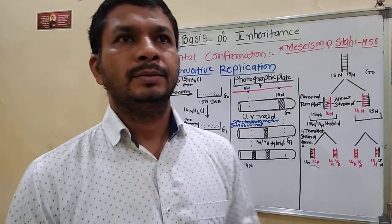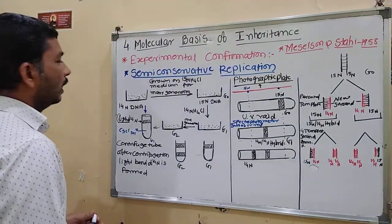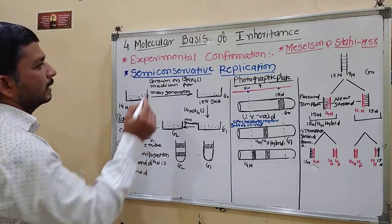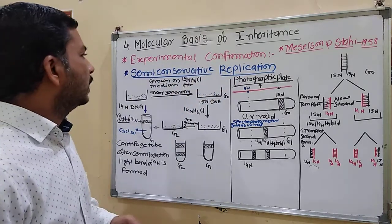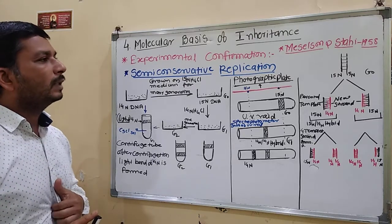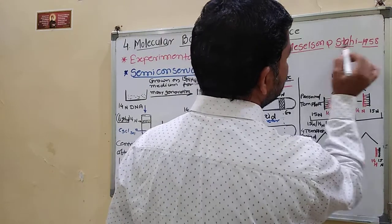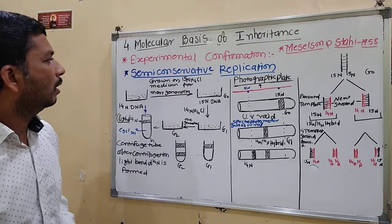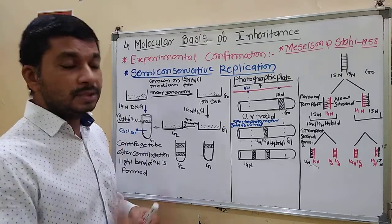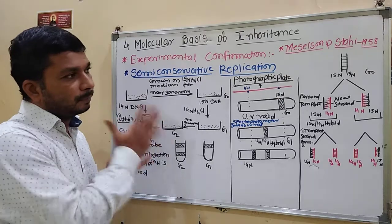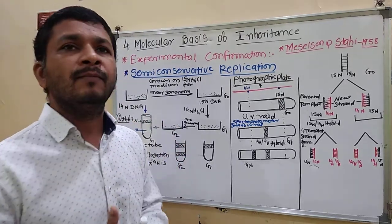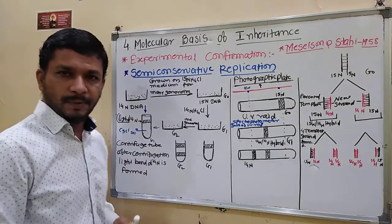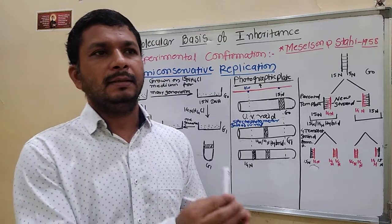Hello students, today we discuss our chapter on molecular basis of inheritance. The next point is experimental confirmation. In 1958, Meselson and Stahl performed the semi-conservative replication experiment, studying how from one parent DNA there is formation of a hybrid DNA, and they confirmed this through experimentation.